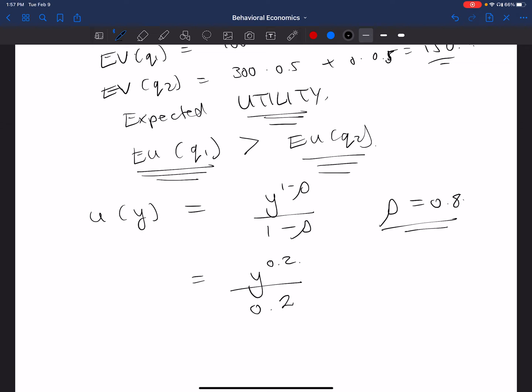Now when we do that, what do we get? For the first prospect, we substitute that in, so the expected utility of Q1, that's going to be equal to 100 raised to the power 0.2 all divided by 0.2. That is equal to approximately 12.56. That's what we get there.